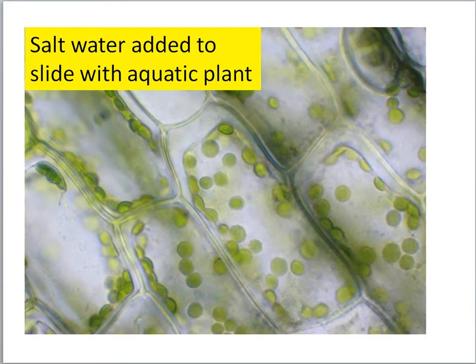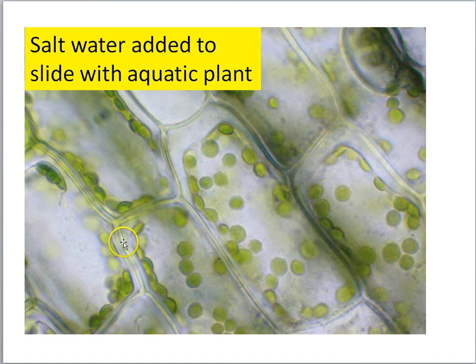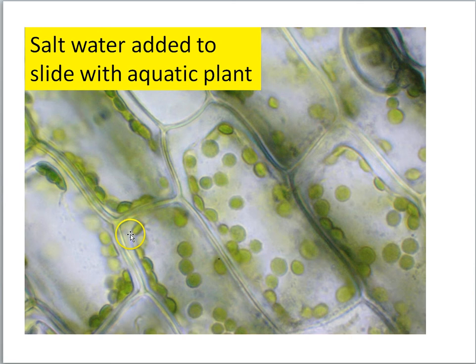Now let's look at some more biology of the cell. Here we're going to do something to the leaf on the microscope — we're going to add a drop of salt water. This is a freshwater aquatic plant. When you add salt water to the slide, water in the cytoplasm begins to move out of the cell. As a result, the cell membrane pulls away from the cell wall. Plant cells have an outer rigid cell wall that does not lose its shape, but within the cell wall is a more flexible boundary called the cell membrane.